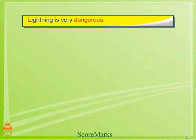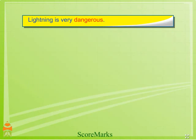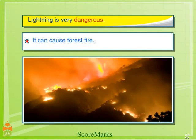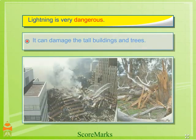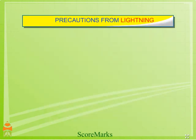Lightning is very dangerous. It can cause the death and burning of living organisms. It can cause forest fires. It can damage tall buildings and trees. We must take precautions to protect ourselves from lightning.